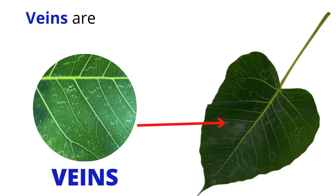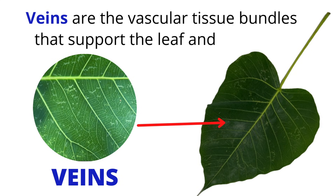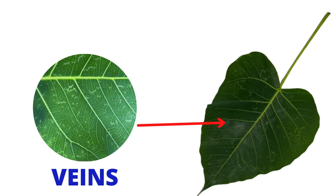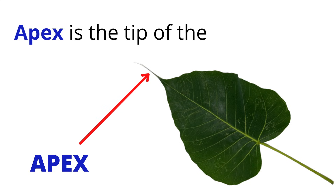Veins. Veins are the vascular tissue bundles that support the leaf and transport nutrients. Apex. Apex is the tip of the leaf blade.